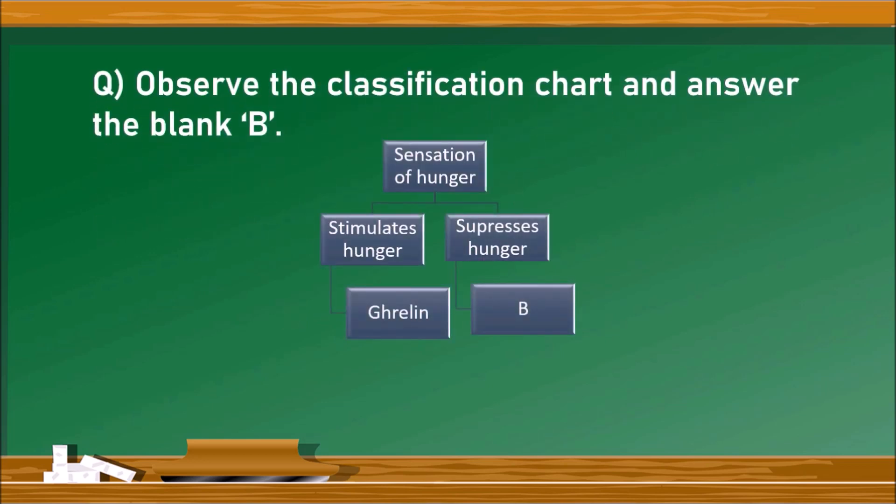Next question. Observe the classification chart and answer the blank B. There is a classification chart with details of sensation of hunger. Heading is sensation of hunger where stimulates hunger is ghrelin. Suppresses hunger is what? That is leptin.